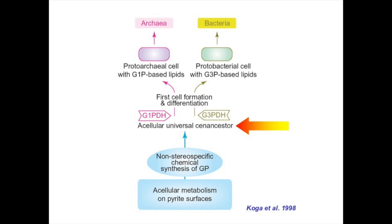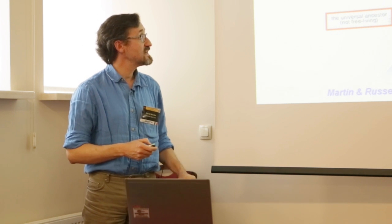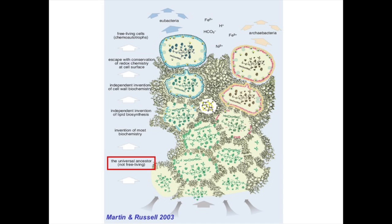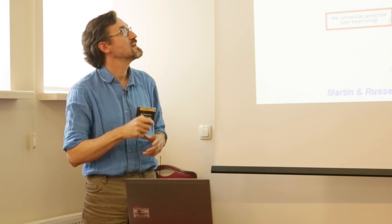This led some authors to propose that the synthesis of glycerol phosphate — and thus phospholipids — evolved relatively late, independently twice: once in archaea and once in bacteria, meaning the universal ancestor had no lipid membranes and was not a cell — it was called an acellular universal ancestor. This idea was later developed by Martin and Russell, who proposed that LUCA had mineral membranes within cavities in a hydrothermal vent, with lipid membranes invented twice independently.